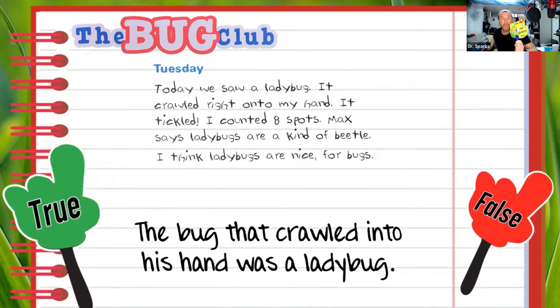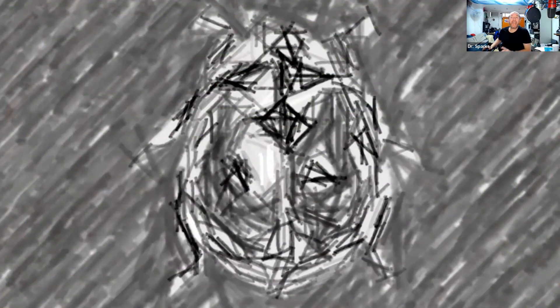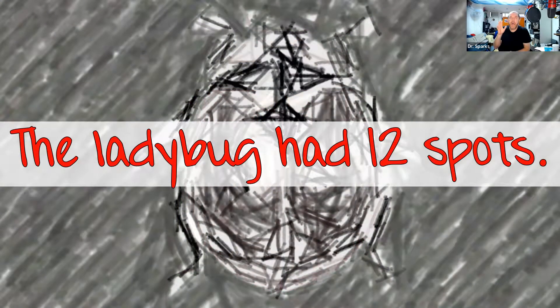That is true. I saw lots of green up there. Which sentence here told us that this was true? Here it says: today we saw a ladybug. It crawled right onto my hand. Boys and girls, we're going to take a look at a ladybug here. I want to know if you can count its spots. Tell me how many spots does it have. Count them all. It's going to go away any second now — oh, it's gone.